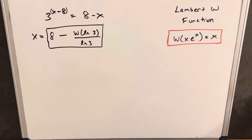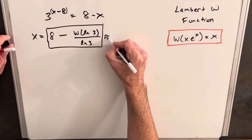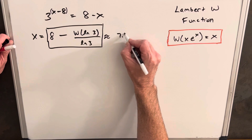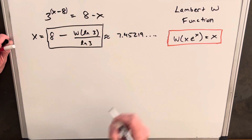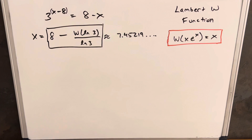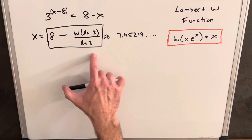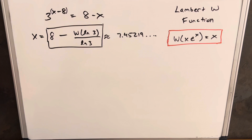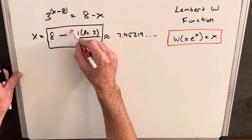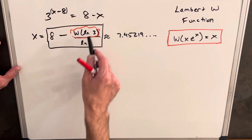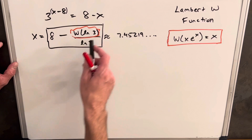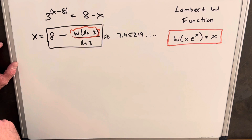I plugged this into Wolfram Alpha and got the solution: approximately 7.45219 with more decimals. Now I want all real solutions, so the question is whether we've found all of them. The key is to look at the Lambert W piece — the input is ln 3, which is approximately a little more than 1.